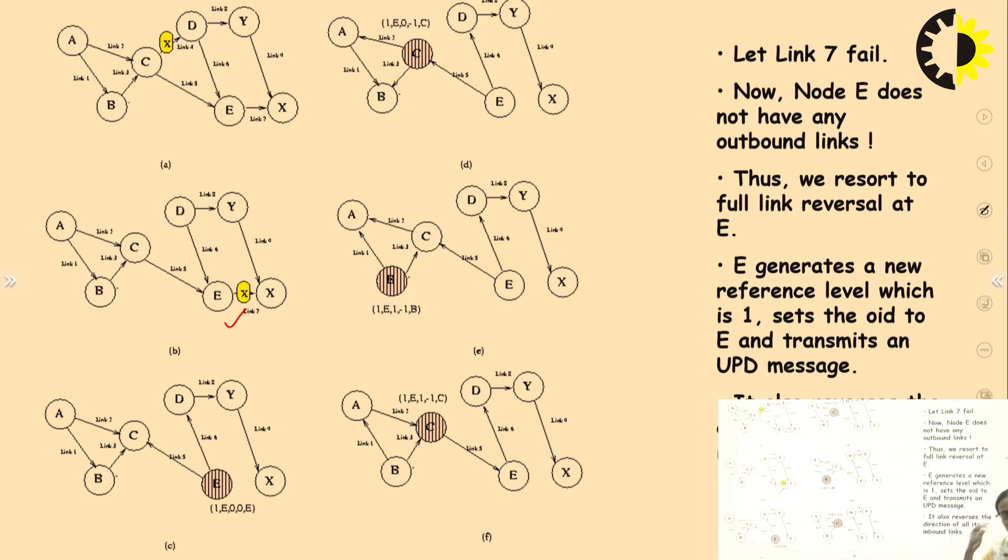It sets the OID. Now OID comes to existence. OID to E and transmits an UPD message. It also reverses the direction of all its outbound links. If you look at the figure here, the link reversal has been done.